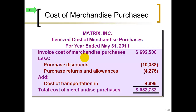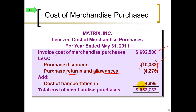Summarizing all the costs of buying: here's the raw cost of the inventory, reduced by any discounts for paying early, reduced by any merchandise returned to the seller or any allowances received. These reductions are credits to the asset. Transportation costs under FOB shipping point are added — debits increasing the asset. The total net cost of purchases made for the period — not what you sold but what you bought — is this net purchases figure.